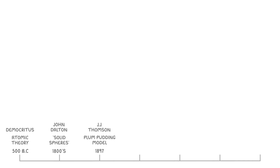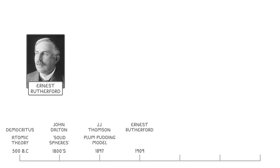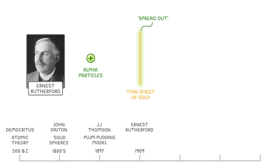Just a few years later, in 1909, a man called Ernst Rutherford and his student made another big discovery. In their experiments, they took positively charged alpha particles and fired them at a really thin sheet of gold. The idea was that if the positive charge in the gold atoms was generally spread out, as JJ Thomson had proposed with his Plum Pudding model, then the alpha particles should pass right through the sheet of gold, because the weak, spread-out positive charge wouldn't be strong enough to affect them.